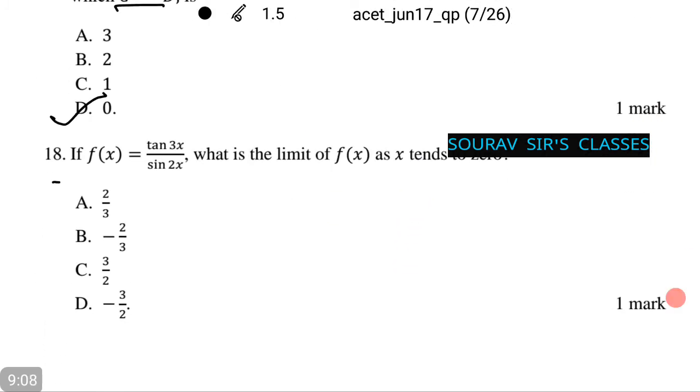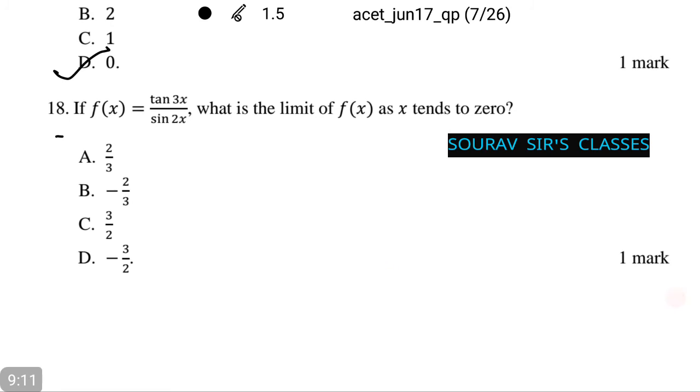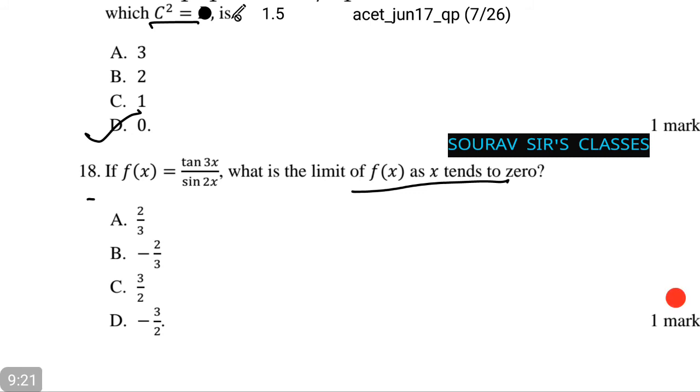Now if f(x) equals tan 3x by sin 2x, what is the limit of f(x) as x tends to 0? Thus, limit x tends to 0 of tan 3x by tan of 2x equals limit sin 3x where x tends to 0 by 3x.